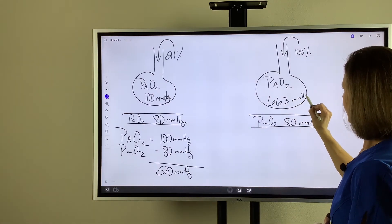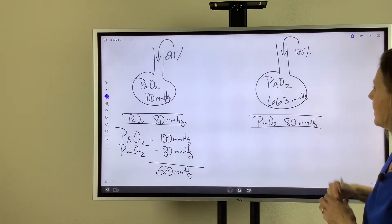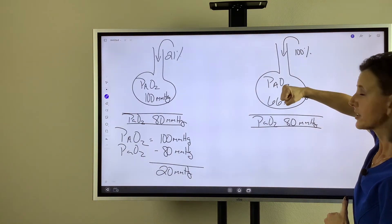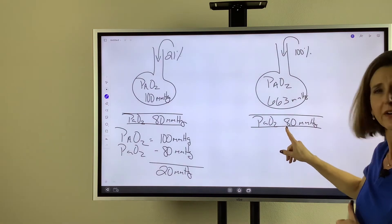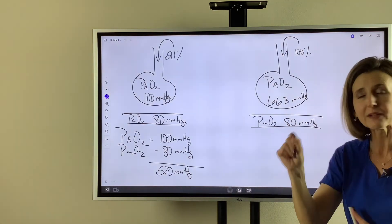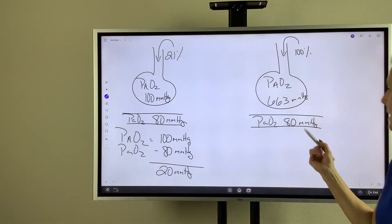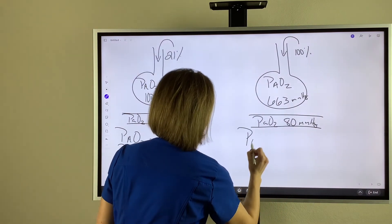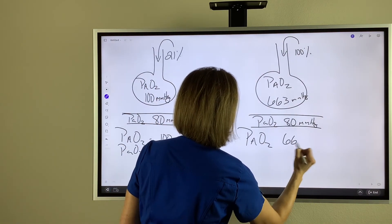Remember, if everything was normal in the lung, the amount of oxygen in the alveoli should drive into the pulmonary capillary bed, and those numbers should be very close. But if we do the mathematical difference now...